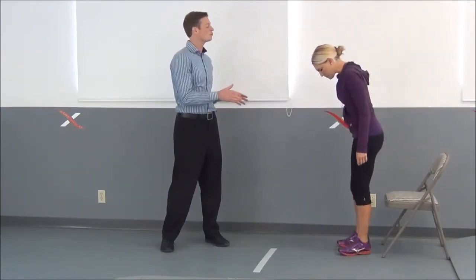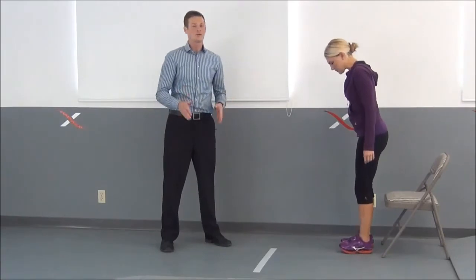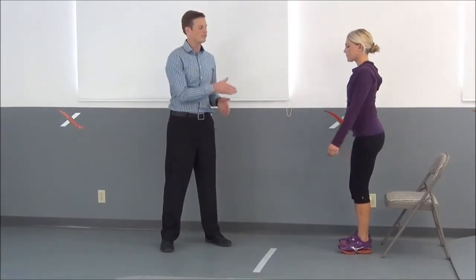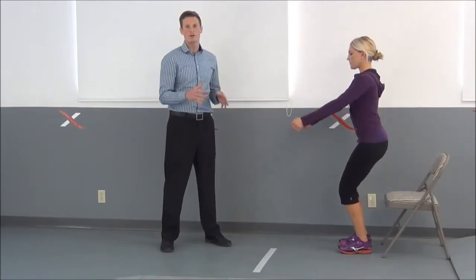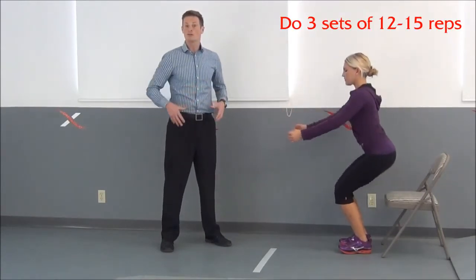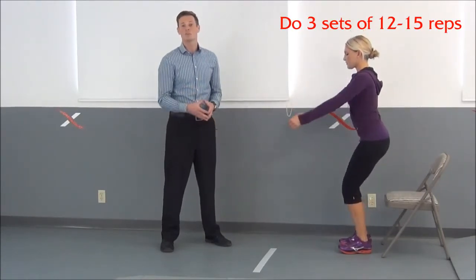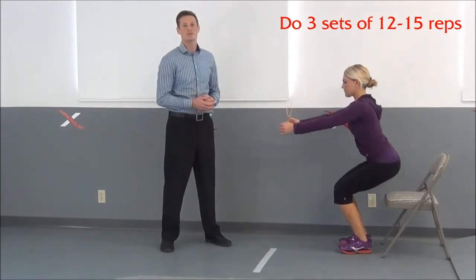The first exercise that Yvonne is going to demonstrate is what we like to call a two-legged squat chair. Her feet are going to be about shoulder width apart. She's just going to be using normal chair height. She's going to really work to get her hips involved there, so that she's really using the glutes, the quads, and all those muscles in the lower leg that are really going to help stabilize that ankle.